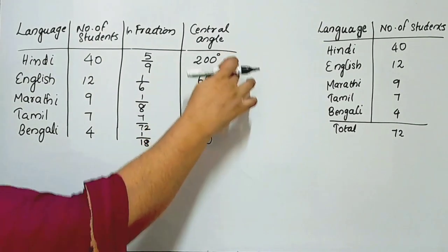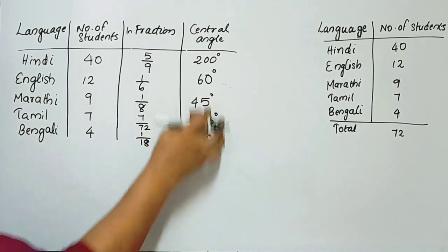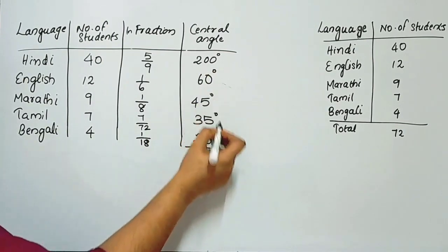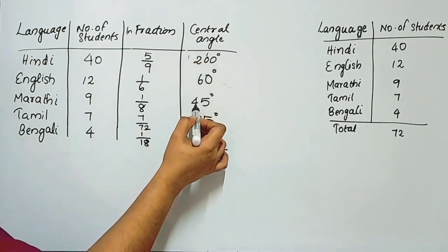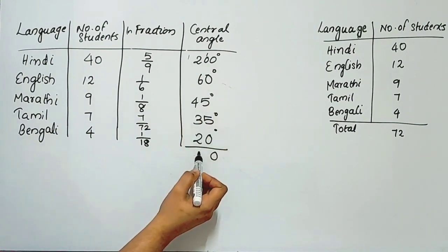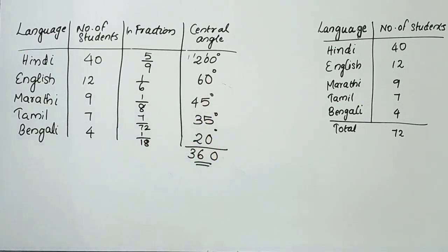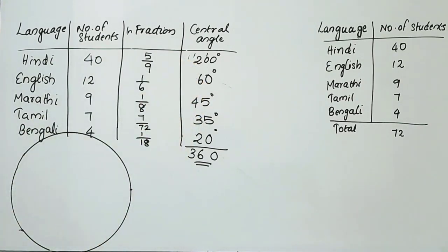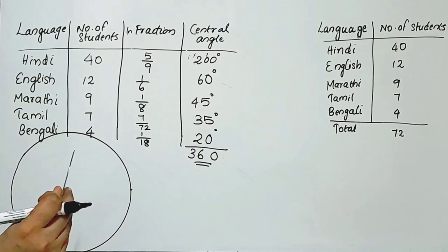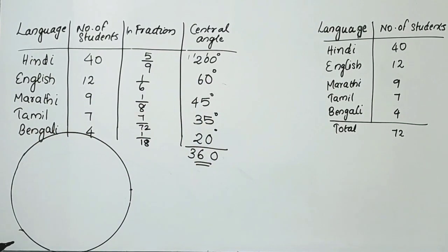Now we verify the central angles add up to 360 degrees. Adding all angles: 200 plus 60 plus 45 plus 35 plus 20 equals 360. The total is correct. Now for the pie chart, we draw a circle and place the protractor at the center.